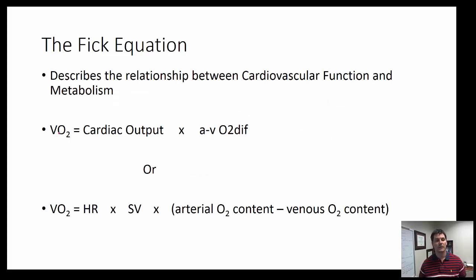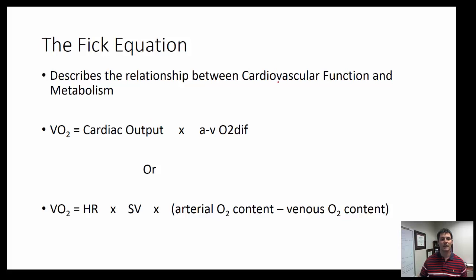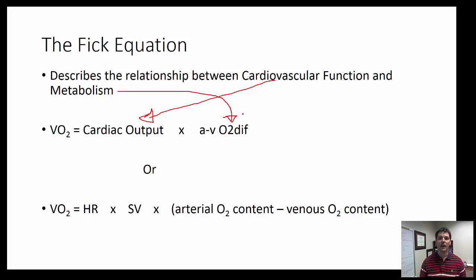The Fick equation is two parts. It allows us to calculate VO2, or oxygen consumption, and it is calculated as cardiac output multiplied by AVO2 difference. What this equation tells us is that we have a relationship between cardiovascular function — cardiac output, pumping and moving blood throughout the system — and our skeletal muscle metabolism. Oxygen diffuses from the cardiovascular system into skeletal muscle, where it is used for aerobic metabolism. Ultimately, oxygen consumption tells us the amount of ATP produced by aerobic metabolism.